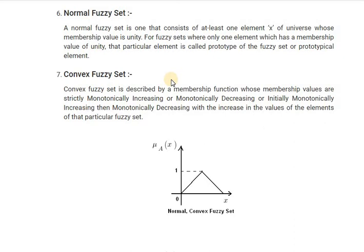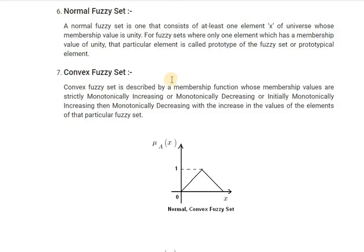So in this figure of normal fuzzy set you can see one element has value unity, that is one. This is the first type of set, that is normal fuzzy set. Let's move on to second type of set, that is subnormal fuzzy set.